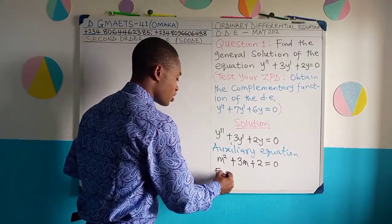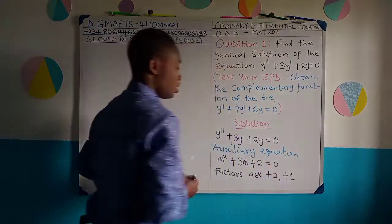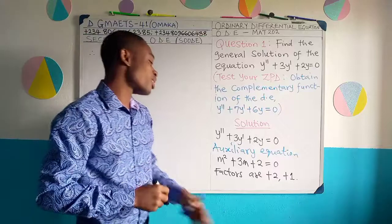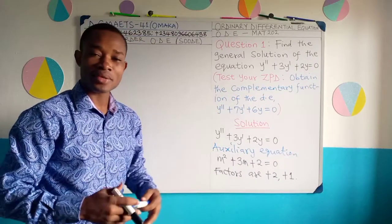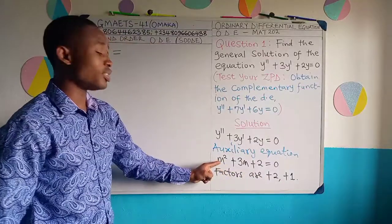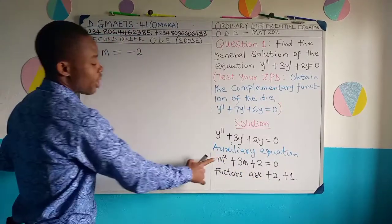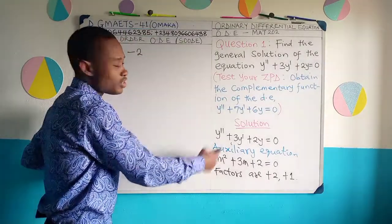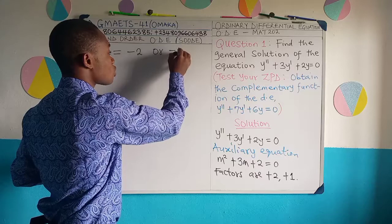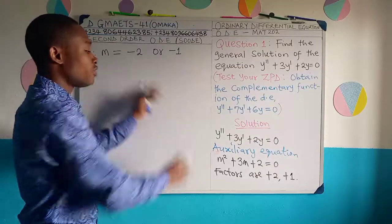The factors are plus 2 and plus 1. To get the roots of this equation, we change the signs of the factors and divide by the coefficient of m². The sign of these two factors is plus, so changing it gives minus 2. Divided by the coefficient of m² — which is 1 — gives minus 2. Similarly, change plus 1 to minus 1, divide by 1, giving minus 1. These are the roots of the auxiliary equation.